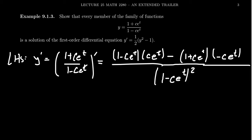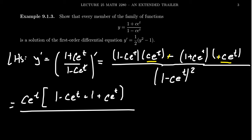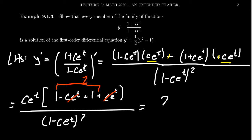We leave the denominator factored, as there's usually no benefit in multiplying it out. Distributing and combining the terms of the numerator will prove profitable. Distributing C e to the T, and noting the double negative, we factor out C e to the T common to both terms. What's left over is 1 minus C e to the T and 1 plus C e to the T, all over 1 minus C e to the T squared. The C e to the T's cancel and the 1's combine to give 2, so the derivative of our function is 2 C e to the T over 1 minus C e to the T quantity squared.